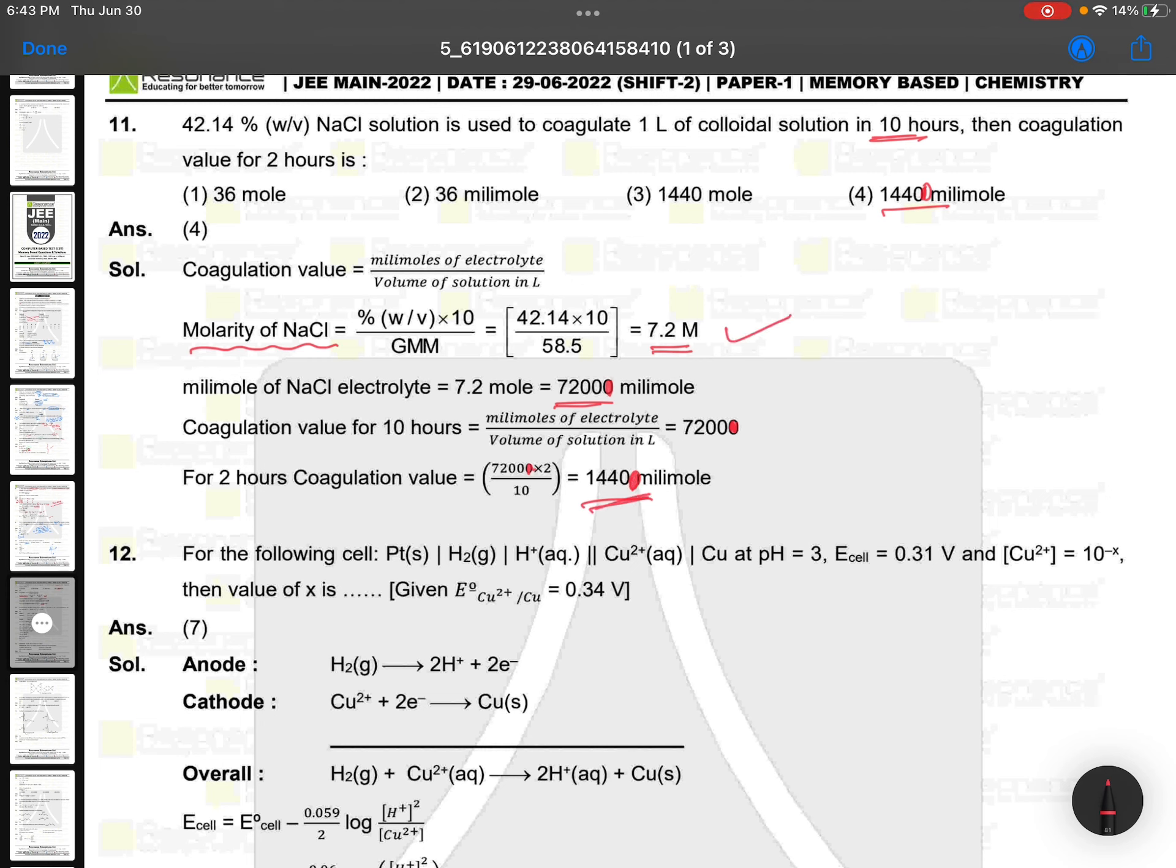First find out number of moles, then whatever molarity is there, that means number of moles we are getting. Better you should take in millimoles because the question is asked about millimoles coagulation value. Coagulation value is generally taken in millimoles. It's a good question, little beyond NCERT. This point is not there in NCERT, I don't think so.